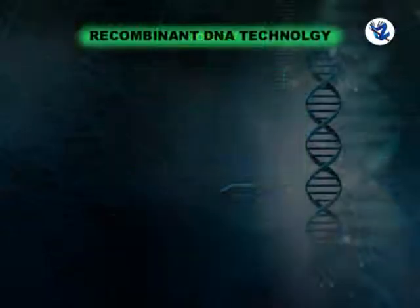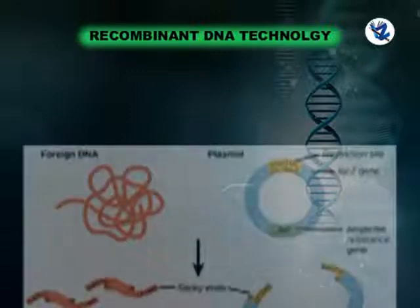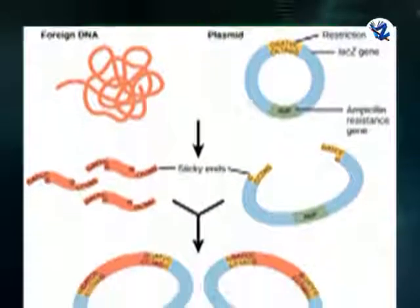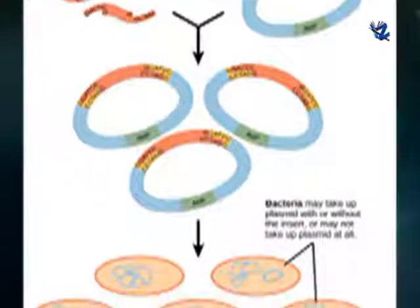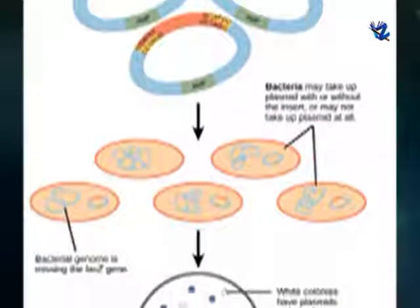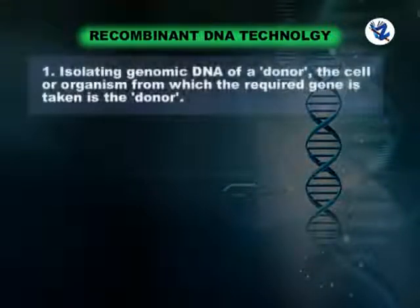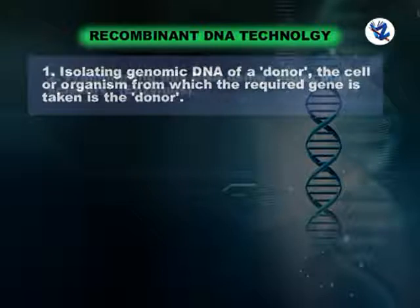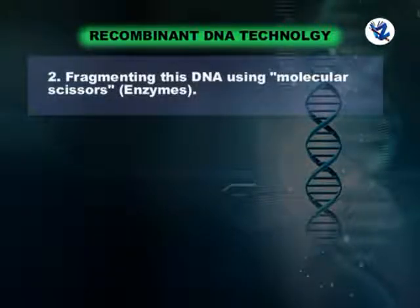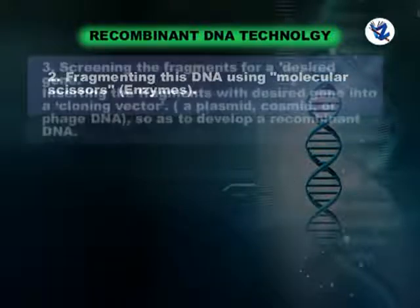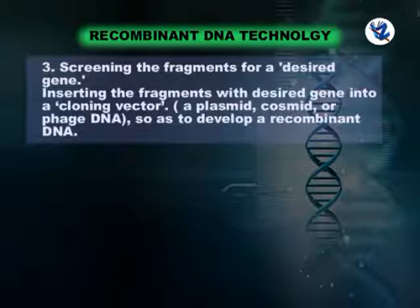First, recombinant DNA technology. It is the technology of manipulating the genome of a cell or organism so as to change the phenotype desirably. The basic steps involved are: isolating genomic DNA of a donor — the cell or organism from which the required gene is taken. Then fragmenting this DNA using molecular scissors, i.e. restriction enzyme, and screening the fragments for a desired gene. Then inserting the fragments with the desired gene into a cloning vector.